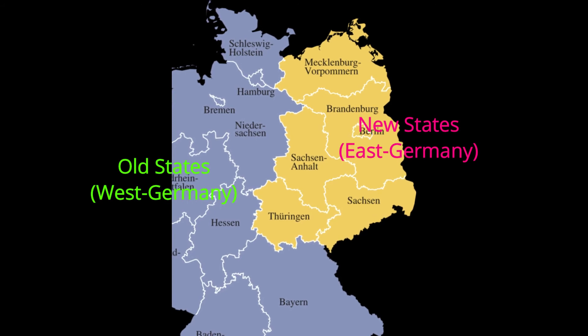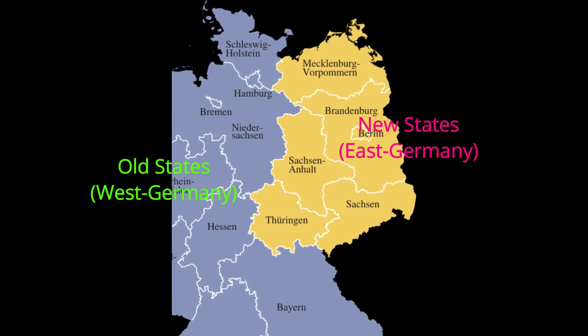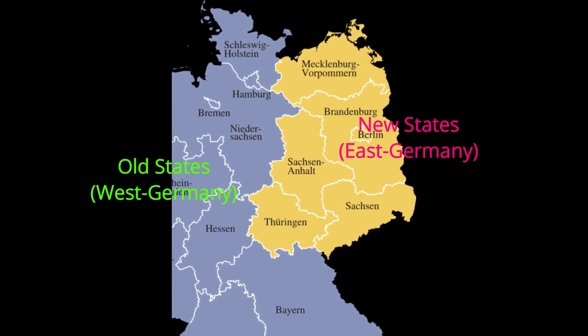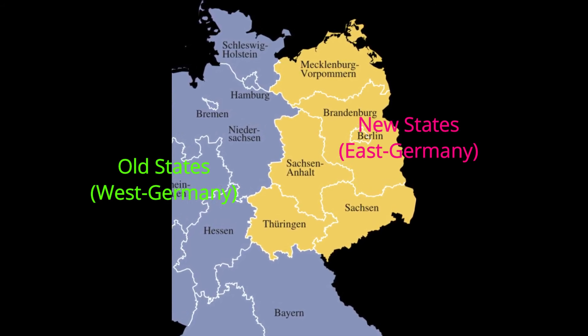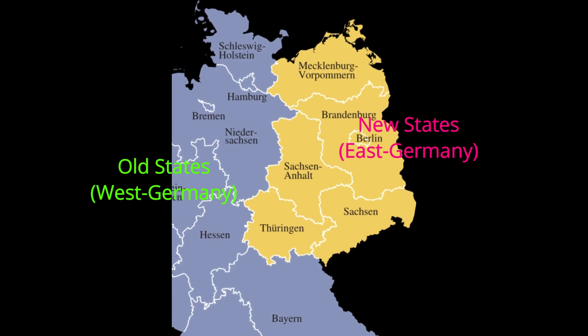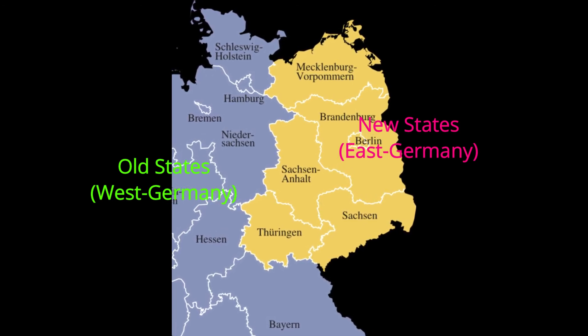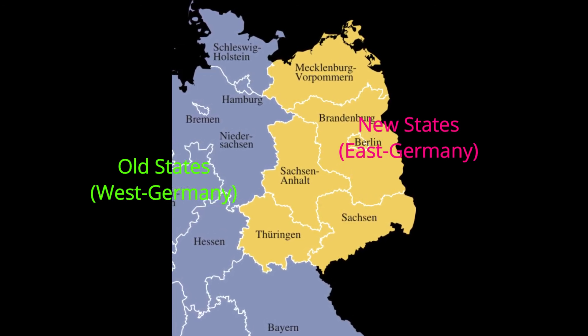The old states are Bavaria, Baden-Württemberg, Saarland, Rhineland-Palatinate, Hesse, North Rhine-Westphalia, Lower Saxony, Bremen, Hamburg, and Schleswig-Holstein.